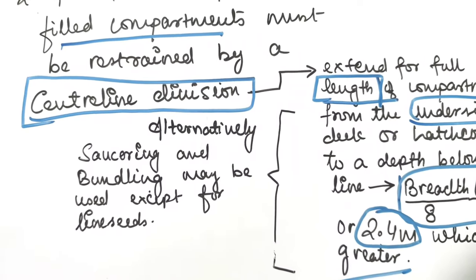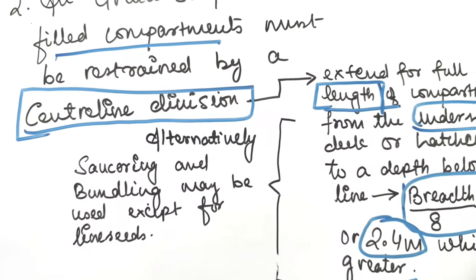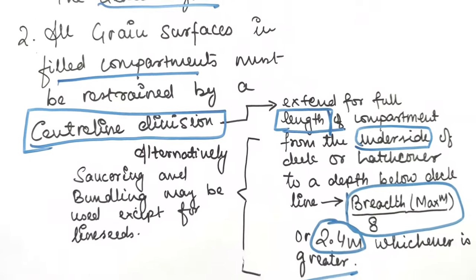Alternatively, saucering and bundling may be used except in the case of linseed. So this is the second and most important one.